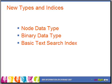In IDS version 11, we have a new node data type to model hierarchical data, a binary data type to store short binary strings, and a new basic text search index to enable built-in text search within IDS.